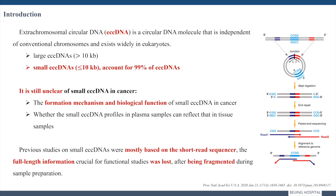ECC-DNAs are circular DNA molecules which are independent of conventional chromosomes and exist widely in eukaryotes. Most of them are shorter than 1,000 base pairs in length. Previous studies on small ECC-DNAs were mostly based on short-read sequencing with fragmented sample preparation, thus losing the full-length information.